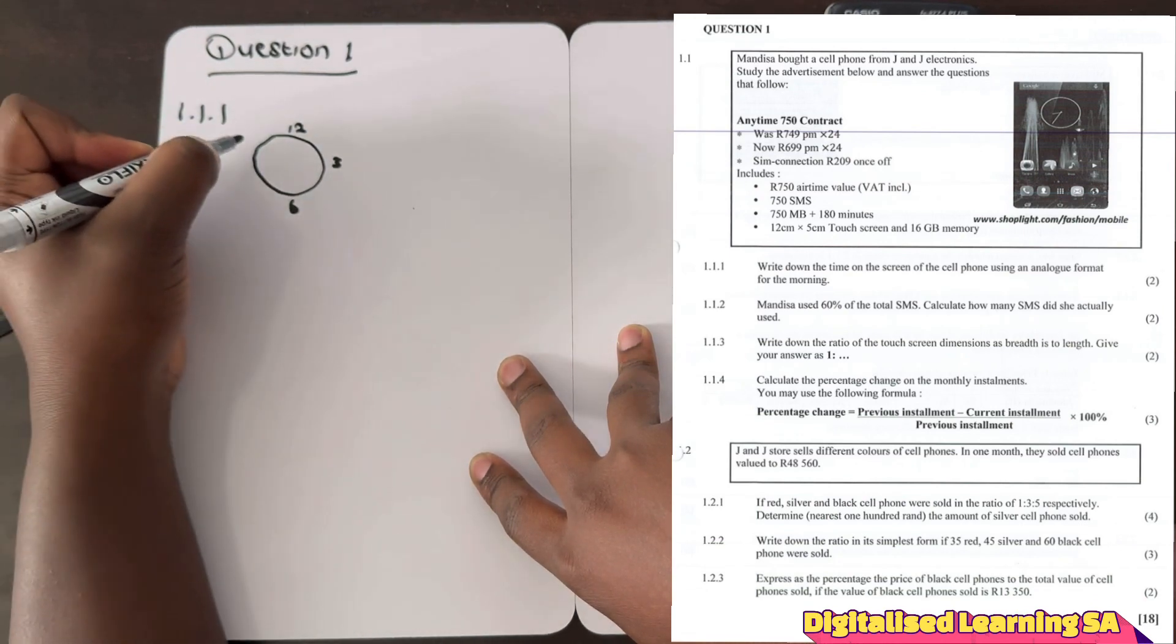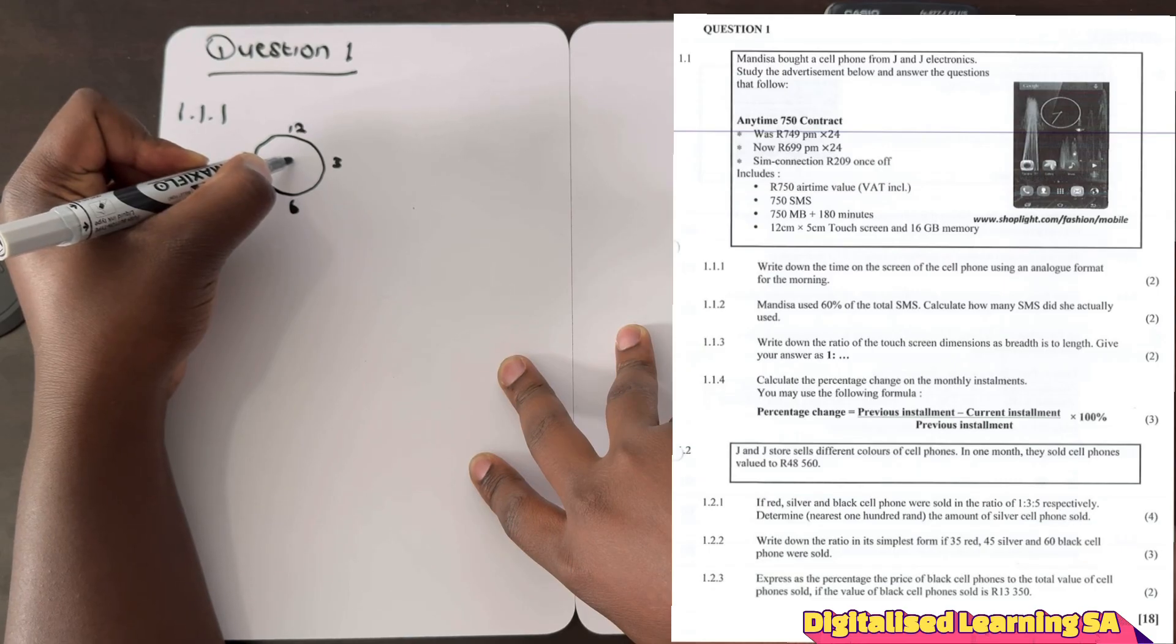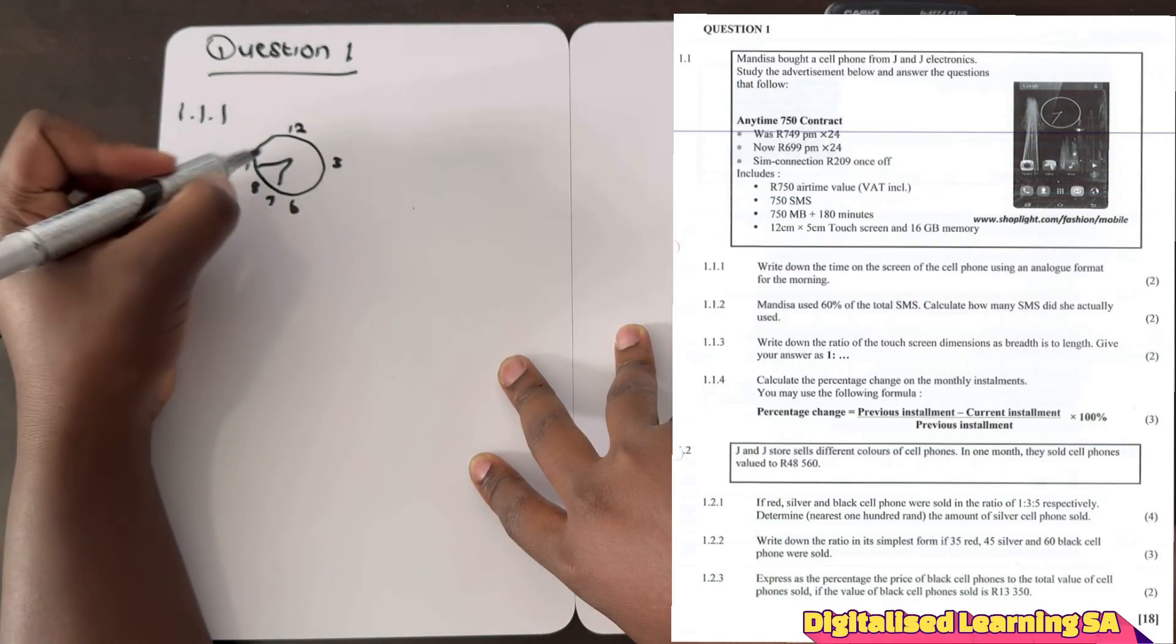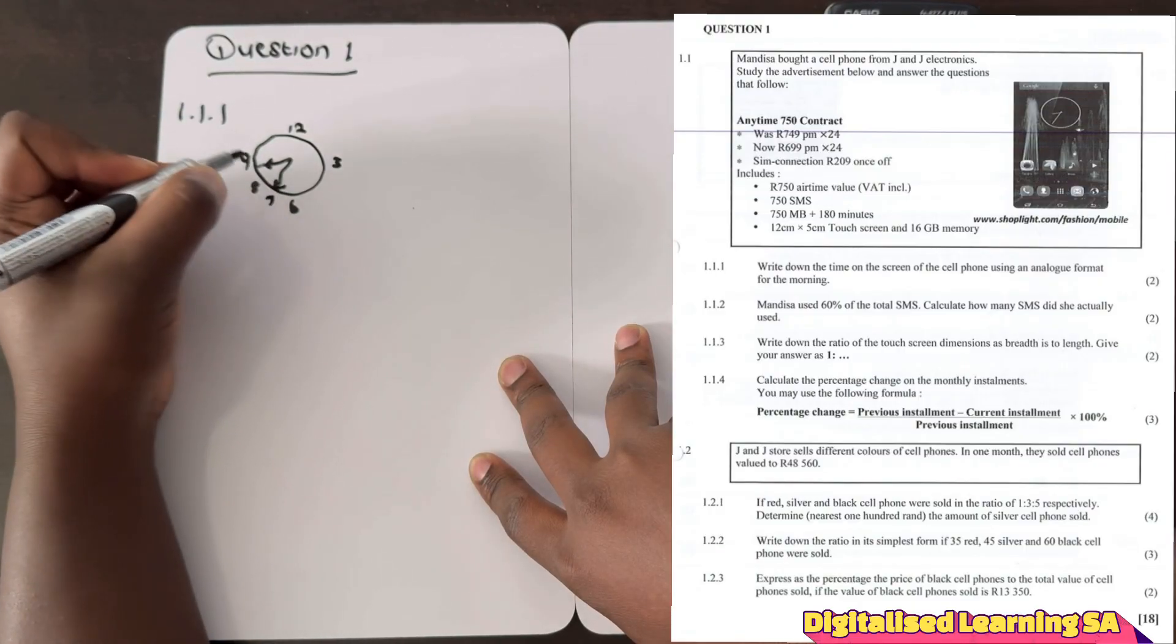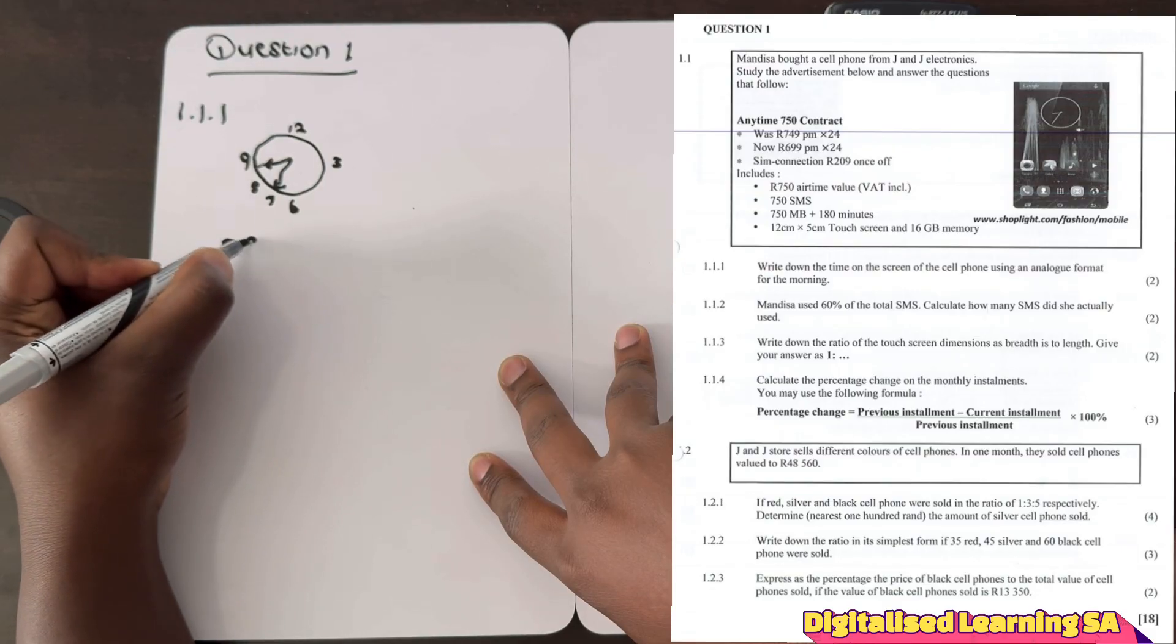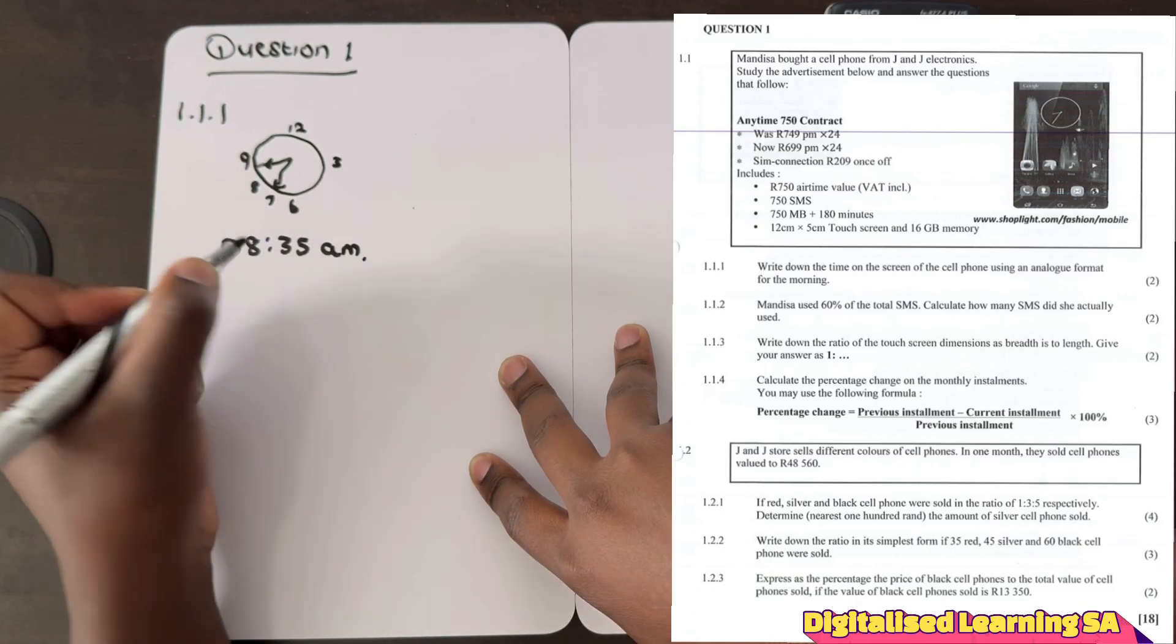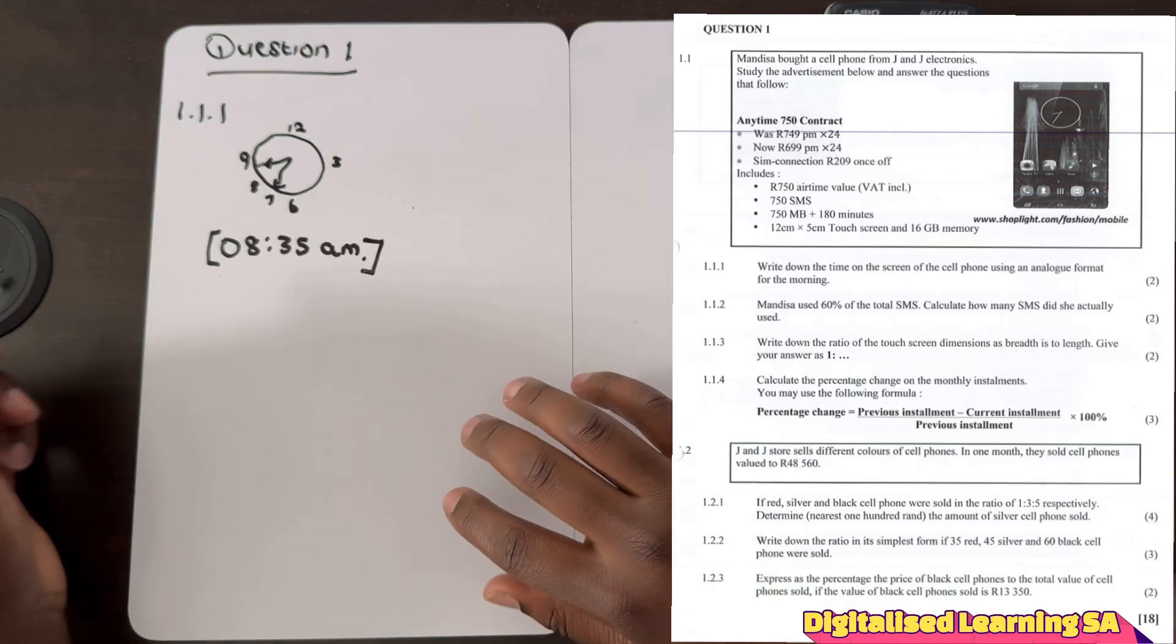If you check on your right hand side you will see the time which is given. We can see that the time is 25 minutes to 9 because this is smaller than this one. So the time is 25 minutes to 9, so the answer will be 08:35 AM, which means it's 25 minutes to 9 in the morning.